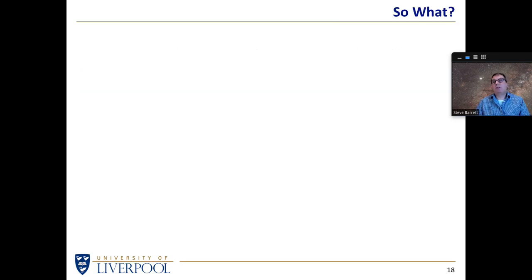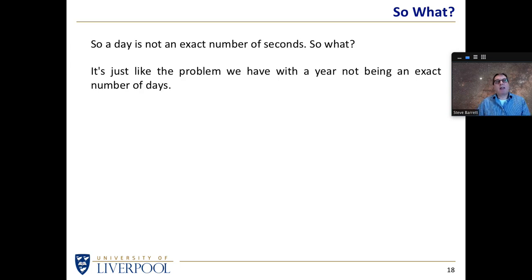So what? So the moon is slowing the earth. Well, a day is not an exact number of seconds. So what? It's not an exact number. Well, it's a little like the problem we have with the year not being an exact number of days. We've known about that for a long time, and we know that one year is 365.2422 days.